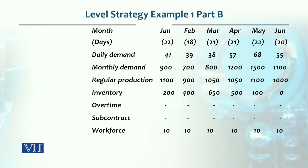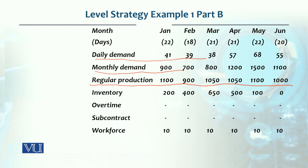Looking at the chart, the top row is months, then the production days available per month are listed: 22, 18, 21, 21 for April, and so on. Daily demand is calculated and listed. Monthly demand is already given. Regular production is calculated as days multiplied by 50 — so 22 × 50 = 1,100, 18 × 50 = 900, 21 × 50 = 1,050, and so on.